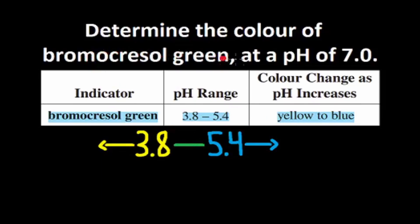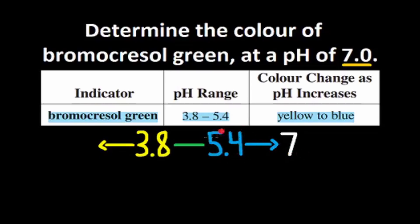We need to determine the color of bromo-cresol green at a pH of 7.0. 7 is not less than 3.8, it's not in between, it's greater than 5.4, so 7 would go here. All pHs greater than 5.4 is blue, so the color of bromo-cresol green will be blue.